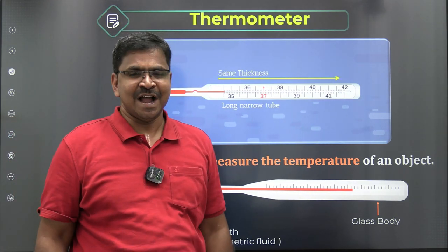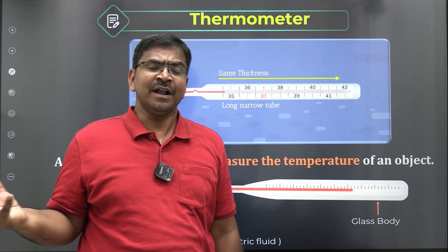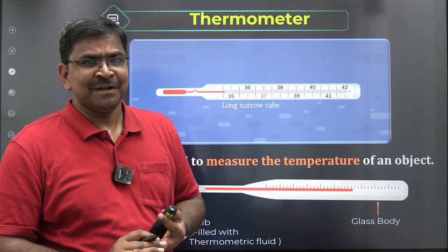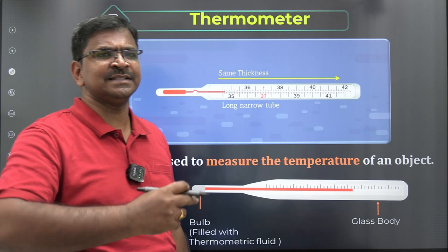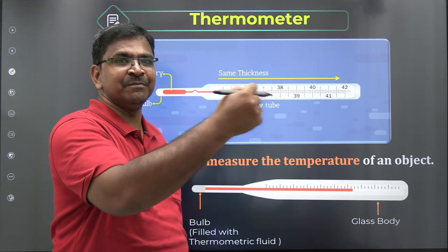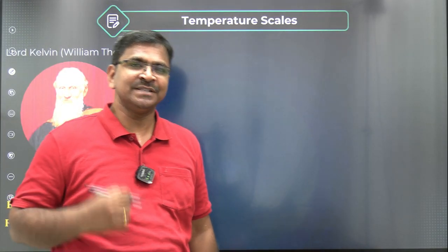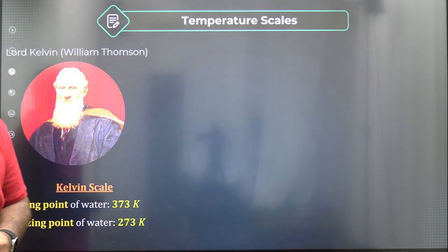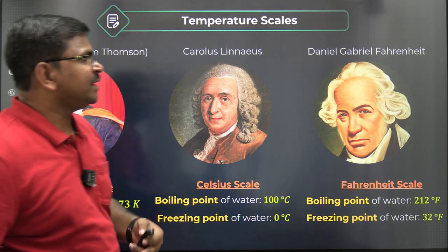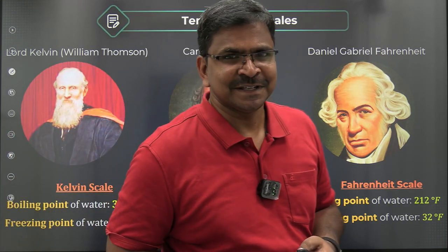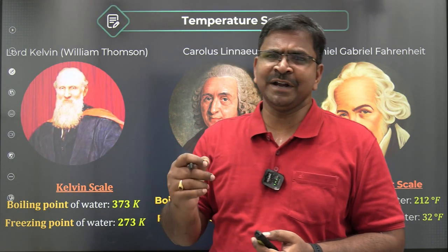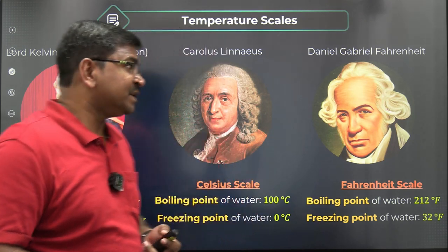We measure with water as a reference — taking ice as one reference and steam as another. Water is the only abundantly available substance used. By taking water's solid state as the ice point at 0°C as the lower fixed point, and steam at 100°C as the higher fixed point, we measure temperature. Scientists Kelvin, Celsius, and Daniel Gabriel Fahrenheit all worked on temperature measurement based on different criteria.